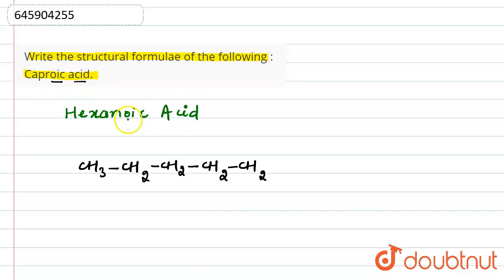see the common name as well as in this IUPAC nomenclature, oic acid is there. And for that, we have to show C double bond O-OH. So that means hexanoic acid is known as caproic acid. Caproic acid